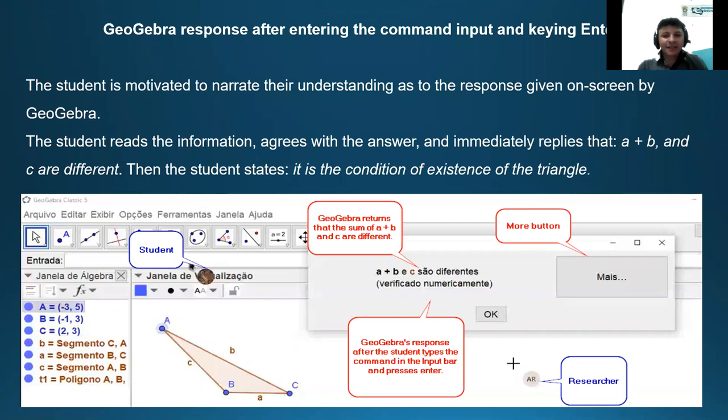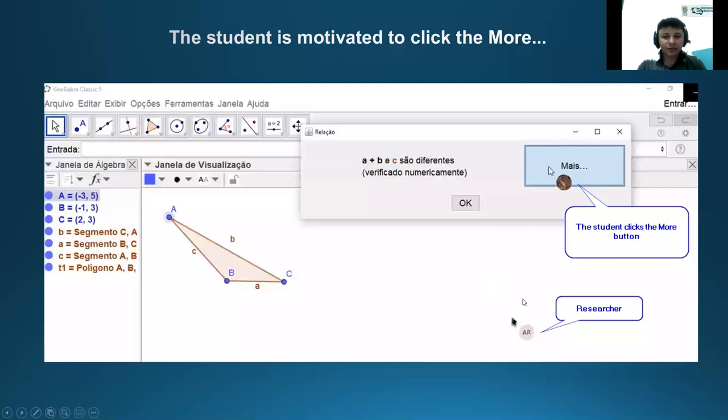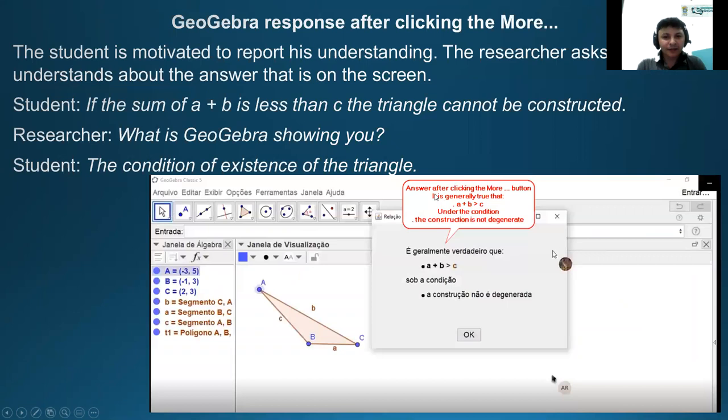We have many commands about the screen of the algebra because the students were motivated to narrate their understanding as a response given on the screen by the algebra. Here, for example, after the command in the algebra, the algebra shows this aspect: a plus b and c are different. It is necessary more information for this, and there is a More button that is sufficient for more information about the construction. In this moment, students read the information, agree with the answers, and immediately realize that a plus b and c are different. This is information about the screen, the algebra.